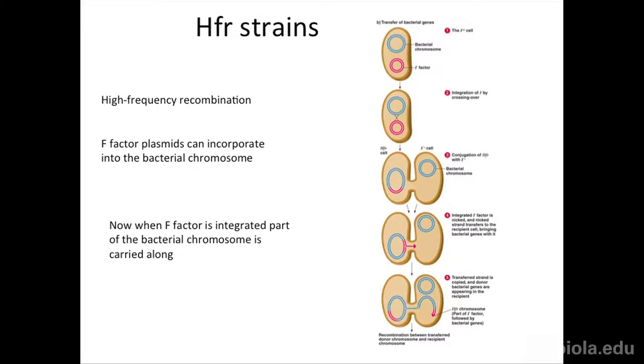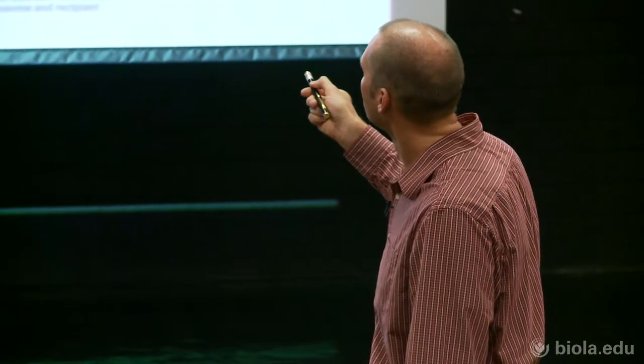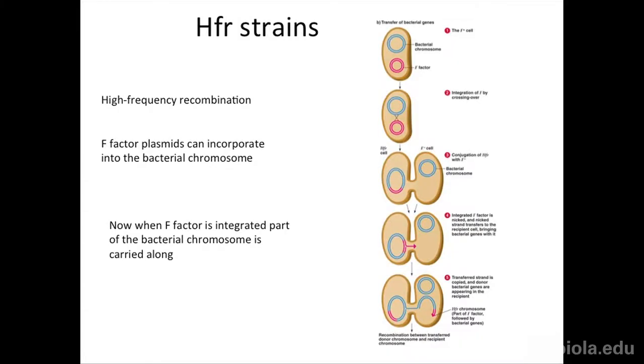Last time we talked about bacterial plasmids and F-factor plasmids. The F-factor plasmids contain the genes necessary for making a pilus — a little tube that connects two bacteria and transfers genetic material. We talked about HFR strains, the high frequency recombination strains, where there is a high frequency of the F-factor plasmid recombining and having crossing-over events with the actual bacterial genome.